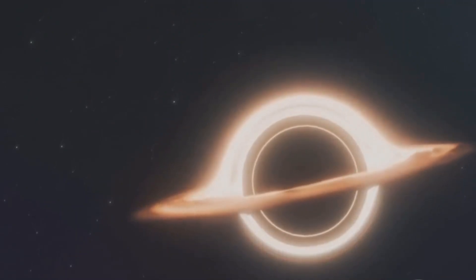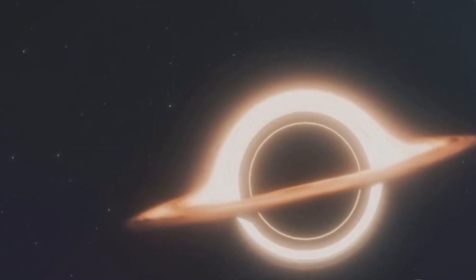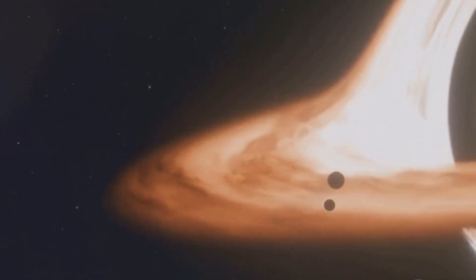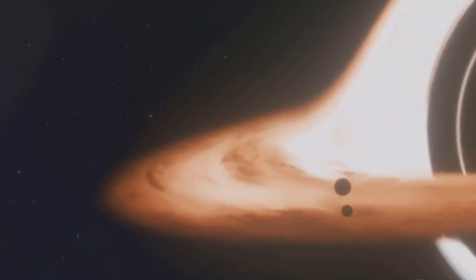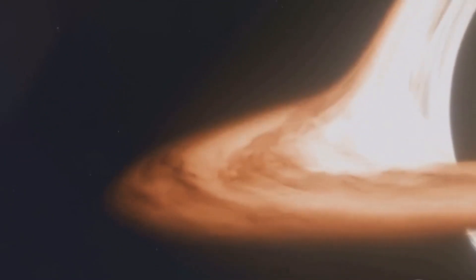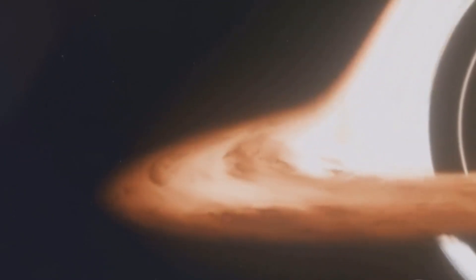It is a place where the laws of physics as we know them cease to apply. Surrounding the singularity is an invisible boundary known as the event horizon. This boundary is crucial in defining a black hole and marks the point of no return. Once an object crosses this threshold, it is forever trapped by the black hole's gravity.